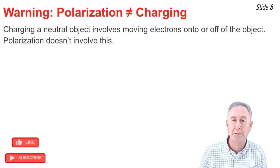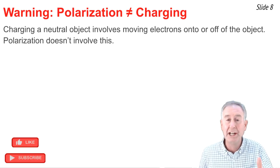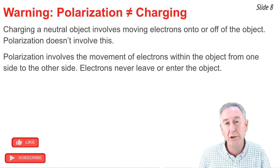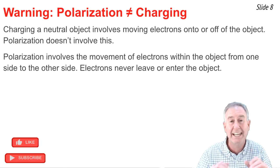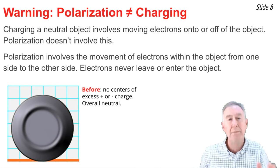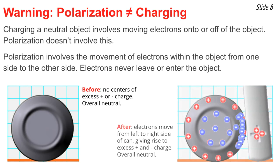It's important to understand that the polarization process is not the charging process. There's no charging going on here. Charging involves the movement of electrons onto an object or off of an object, so as to disrupt the balance of charge within that object. That's not what's going on with polarization. In polarization, electrons are moving, but they're moving within the object — never leaving it, never entering it, only moving within its boundaries. Before the pop can gets polarized, it's a neutral object with no center of excess positive or negative charge. When we bring a positively charged object near, electrons move from one side to the other, giving rise to an excess of positive charge on one side and negative on the other. But it's overall neutral because electrons have not entered or left the pop can. Polarization is not the same as charging.